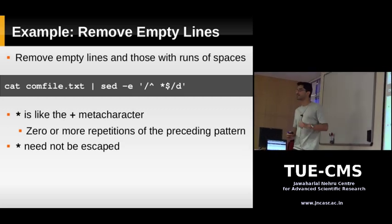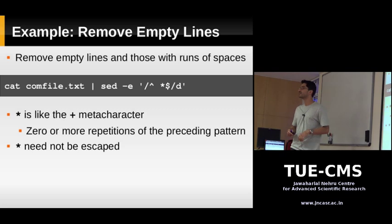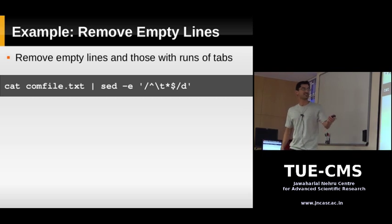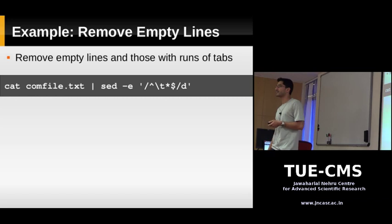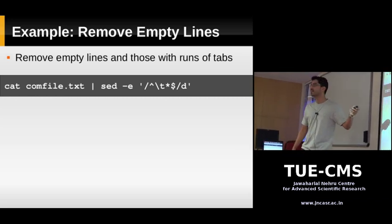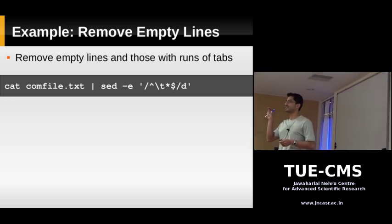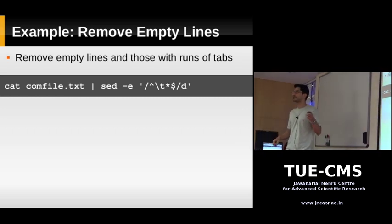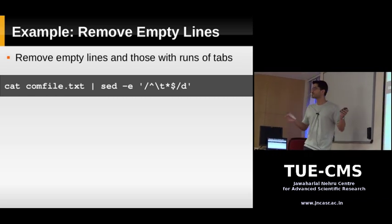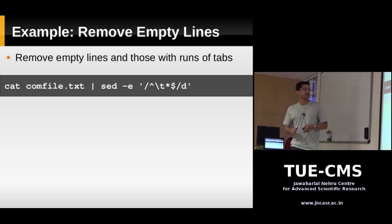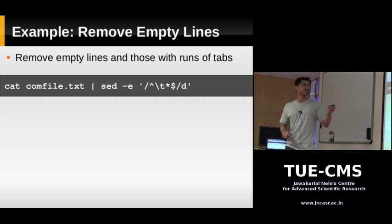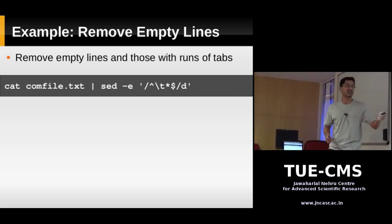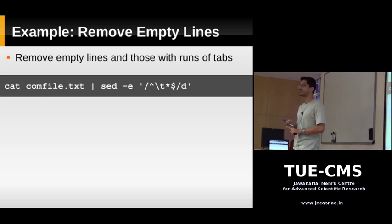Now let's do this for tabs also. For lines which have one or more tab characters, instead of the space, we put \t. The \t stands for the tab character — this is also an escape sequence in sed. When sed sees \t it substitutes the actual tab ASCII character. So it's going to look for zero or more tab characters on your line. This line is going to remove empty lines — because we have a star — plus it removes lines which have one or more tabs.